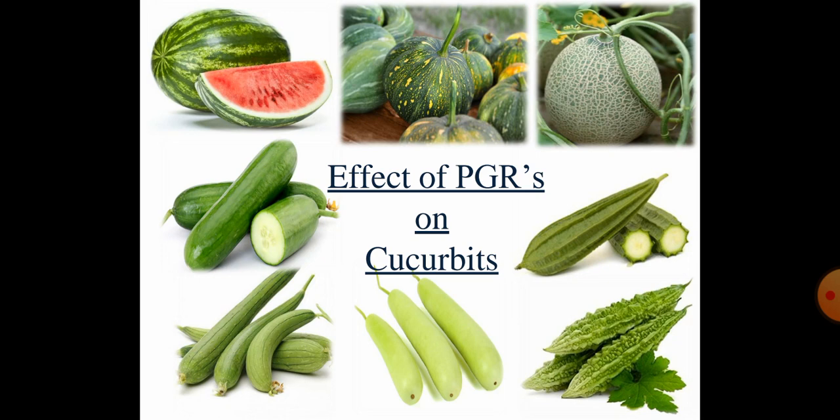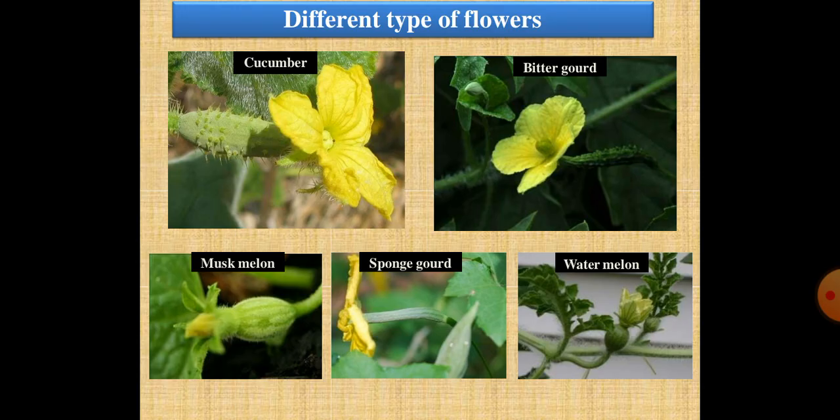Now we are going to look at different types of flowers. When you see cucurbit flowers, most cucurbit crop flowers are yellow in color. It is easy to identify the male and female flowers of cucurbits. These are the female flowers — when you see the back side or lower side of the flower, there is an enlarged ovary. This is the mark of identification of the female flower. In the male flower, there is no enlargement of the ovary.